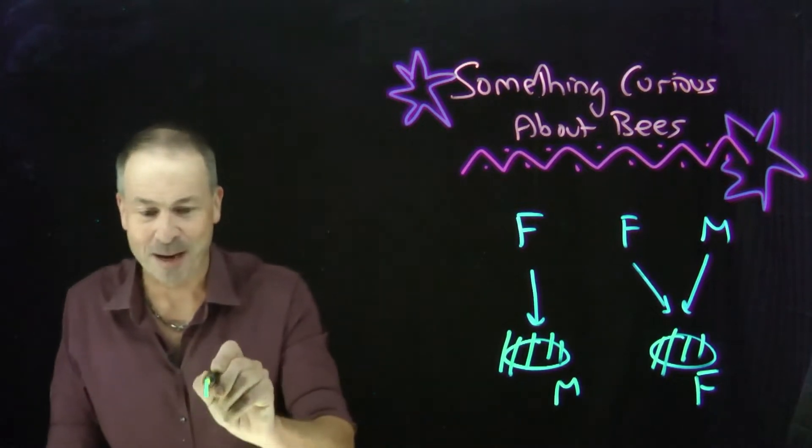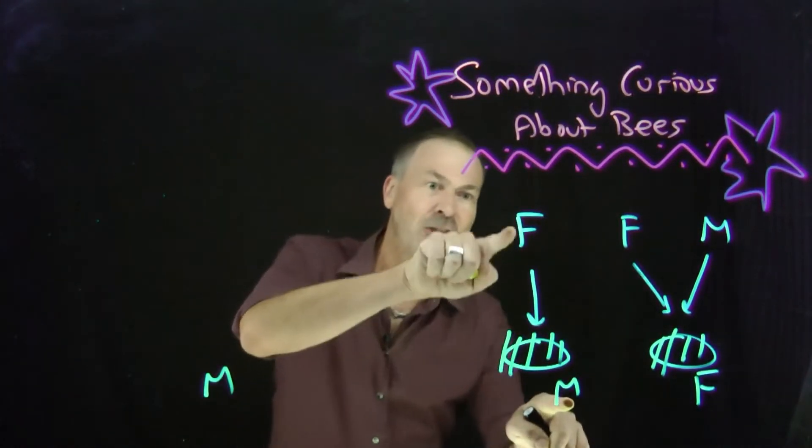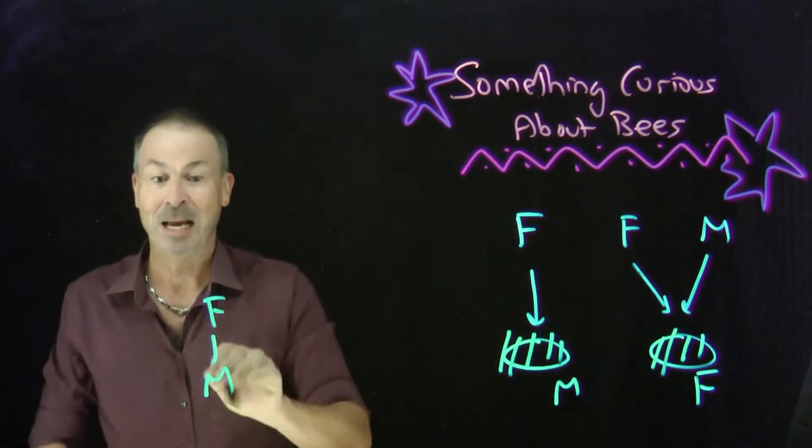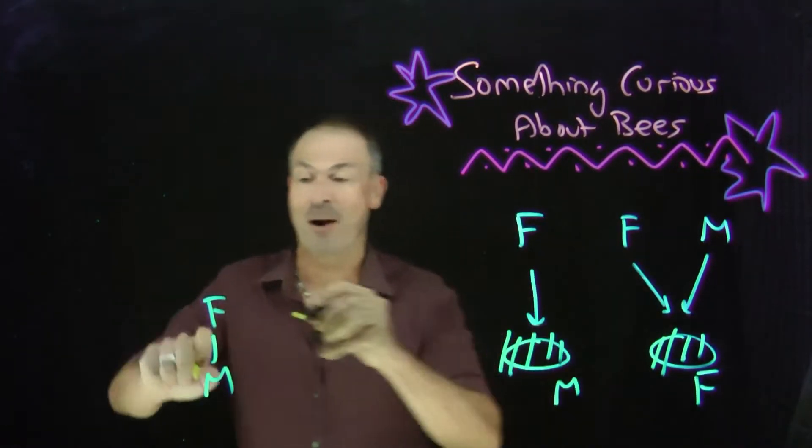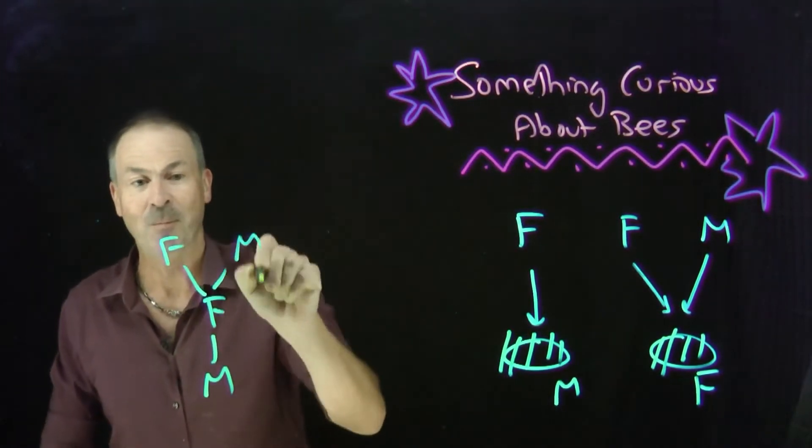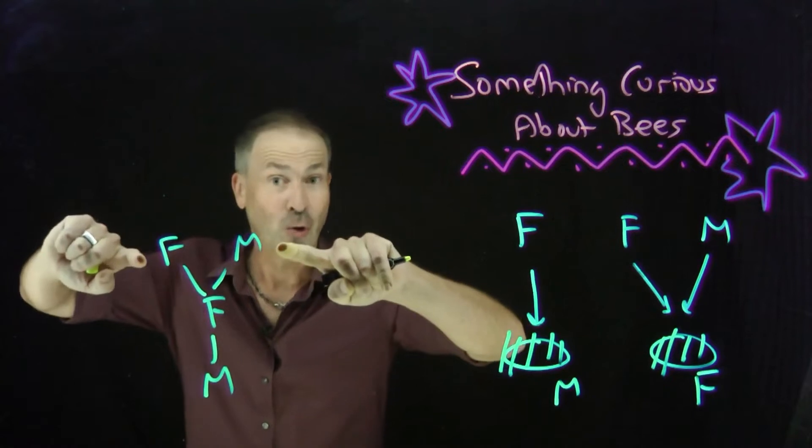In fact, let's start with a single bee, a single male. A male has just one parent, a female. Whereas that female there will have two parents, a female and a male. Which means my original bee has two grandparents.